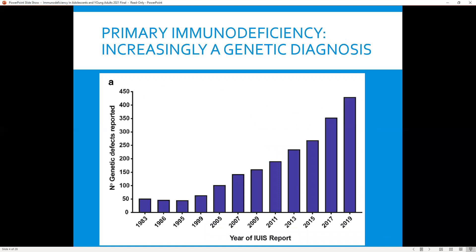What do we know about primary immunodeficiency in the genetics? In the last 10 years, there's been a very steep incline in the number of monogenic forms of primary immunodeficiency identified. But this doesn't take away from the fact that this is still a clinical diagnosis, and there are very important questions that we need to ask our patients before just jumping to a broad-based panel or exome sequencing.